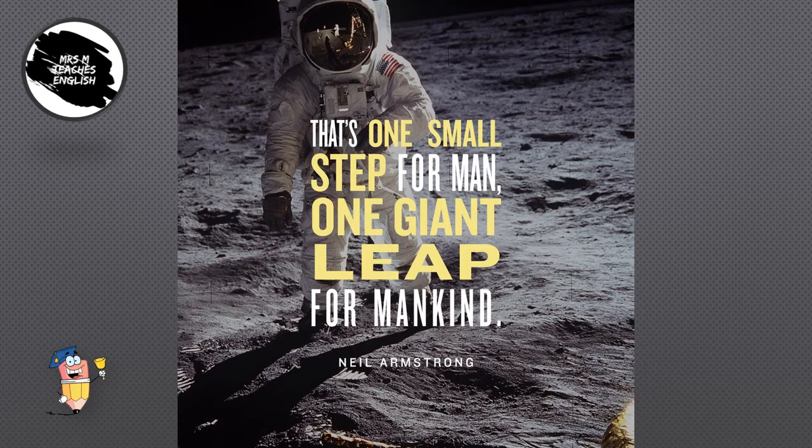In 1969, Neil Armstrong was the first human to set foot on the moon. When his words were beamed back to earth, he used antithesis in his famous line: that's one small step for man, one giant leap for mankind. The syntax juxtaposes the one small step with one giant leap, and man with mankind.